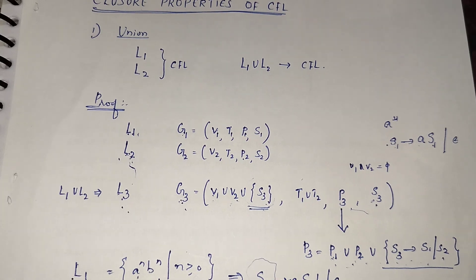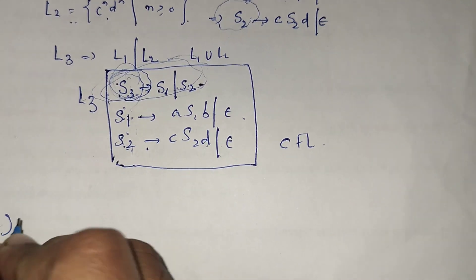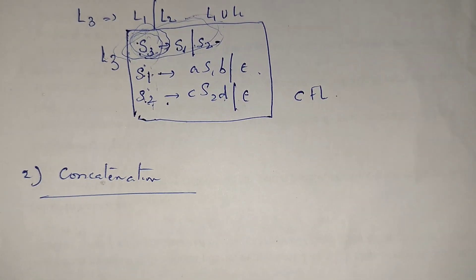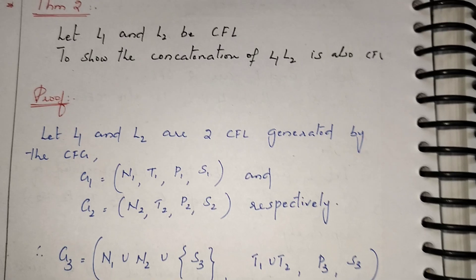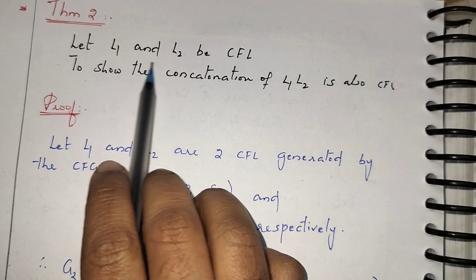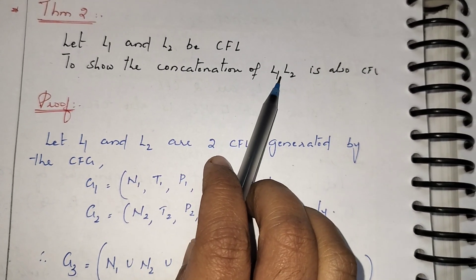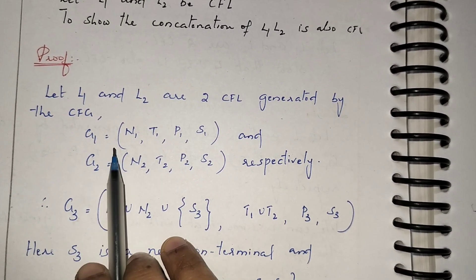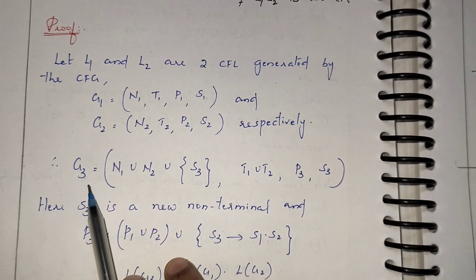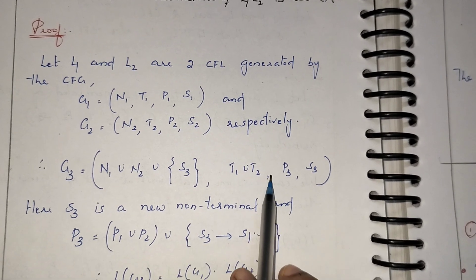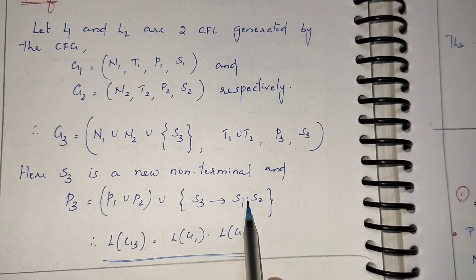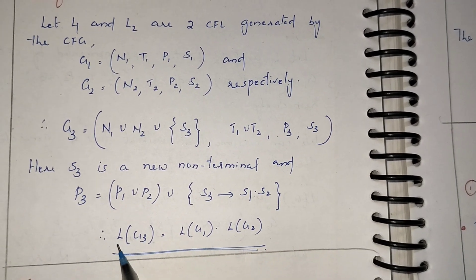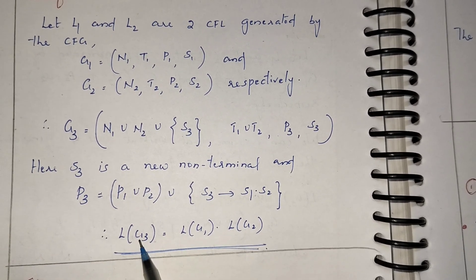The second closure property is concatenation: the concatenation of two context-free languages is also a context-free language. The proof setup is the same as for union — we take L1 and L2 generated by G1 and G2. For G3, we add one new non-terminal S3 and one new production. Instead of S3 → S1 | S2, it becomes S3 → S1 S2 (concatenation). S3 is the new start symbol of the concatenated grammar.